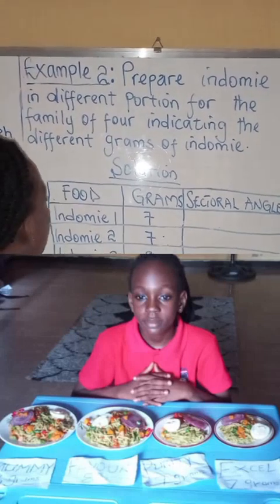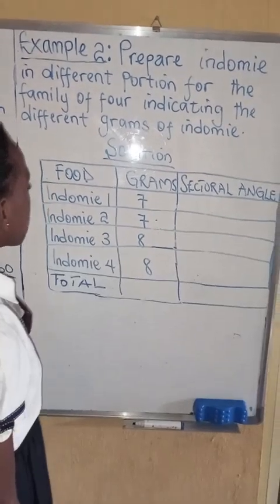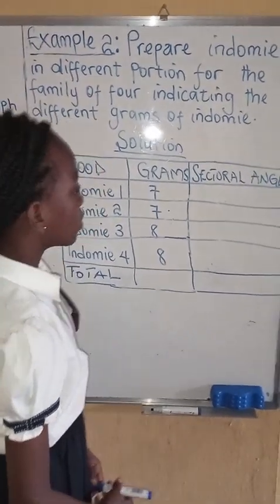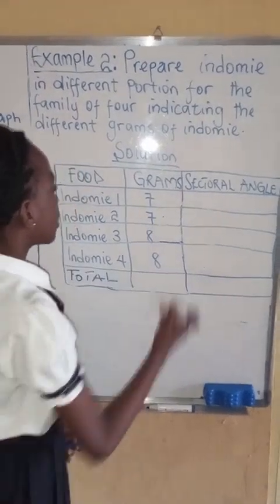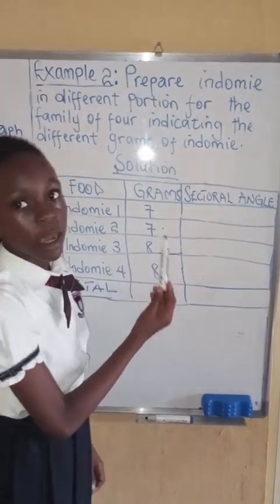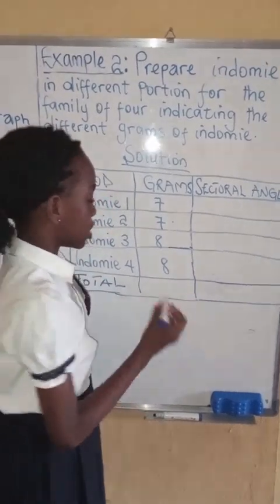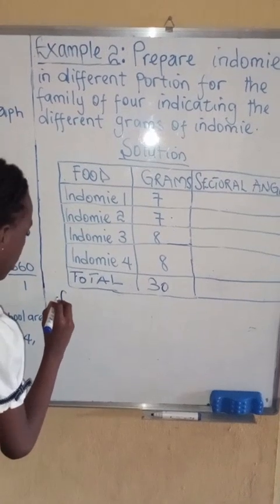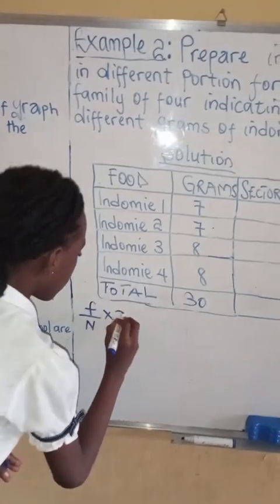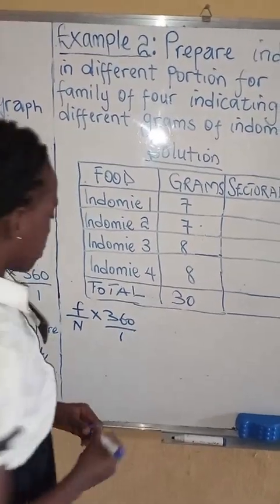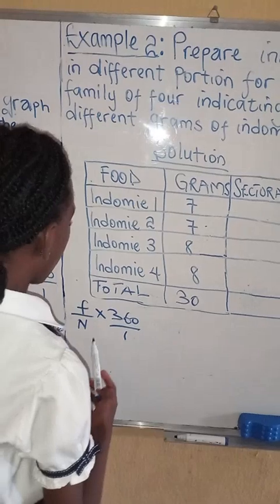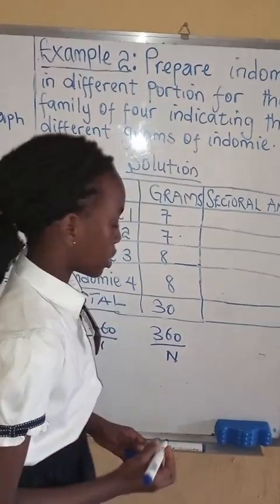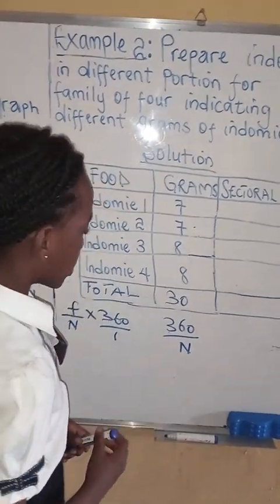Here is the table of Indomie. Indomie 1 to 4. Indomie 1 has 7 grams, Indomie 2 has 7 grams, Indomie 3 and 4 has 8 grams. To find the sectoral angle, first of all we add the order of the grams. 7 plus 7 is 14, 14 plus 8 is 22, 22 plus 8 is 30. So the total gram is 30.